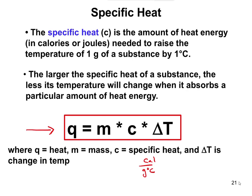Delta T is going to be the change in temperature. Anytime you see delta something, delta T is going to be the temperature final minus temperature initial — it's always final minus initial. So if you're cooling something, you would have a negative delta T because your final temperature would be lower than your initial temperature.